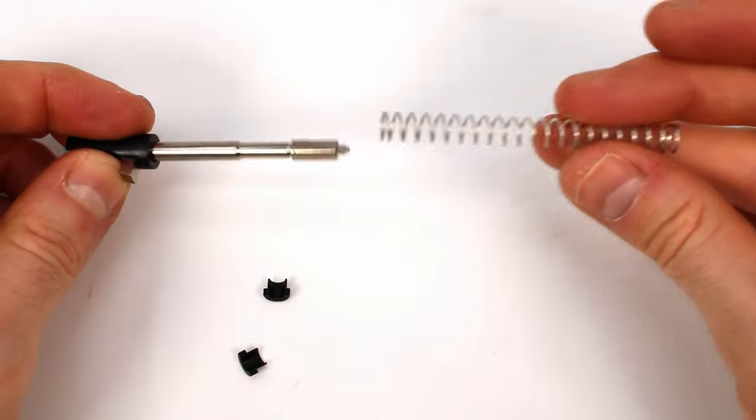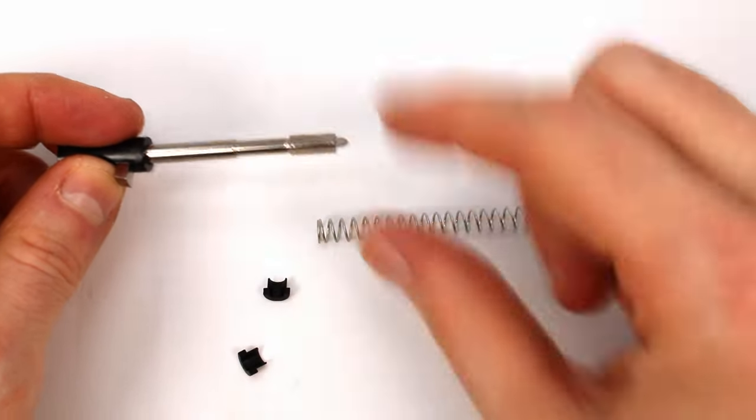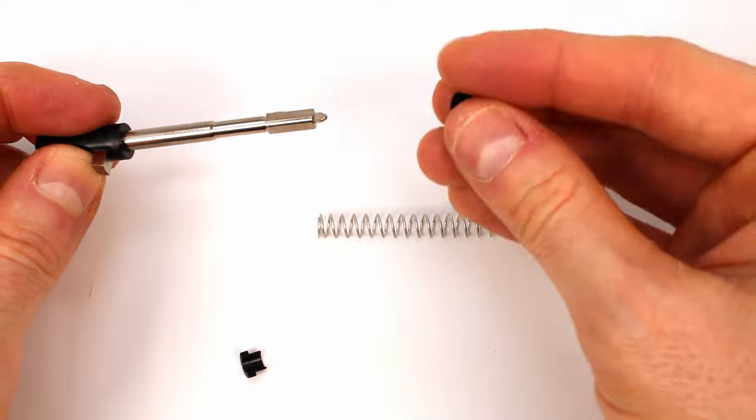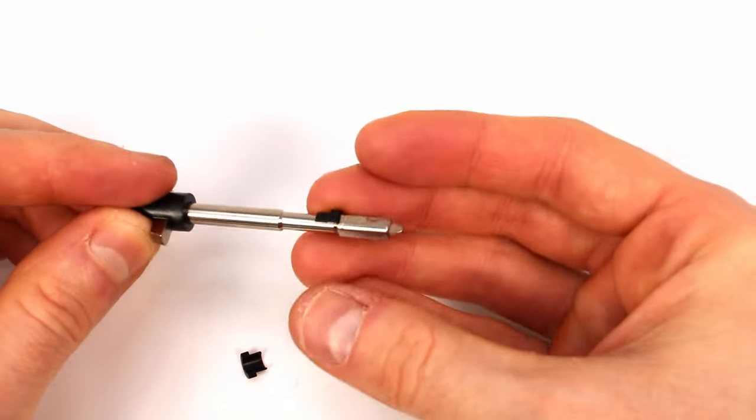The next thing that we're going to want to do is slide the spring over the firing pin, and what you want to do is compress it as much as possible so that you can get these little spring cup retainer things on here. They're going to rest just below the head of the firing pin like so.